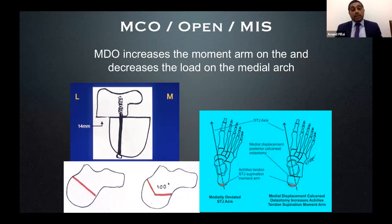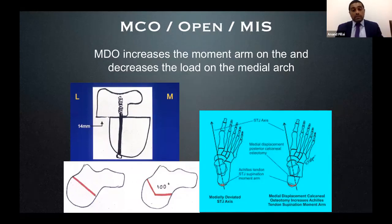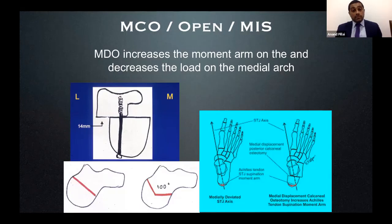Remember that the FDL, when first transferred, has only about 30% of the power of the original tibialis posterior tendon — almost like replacing a truck tyre with a bicycle tyre. It does hypertrophy and take on more load over time, but not initially.